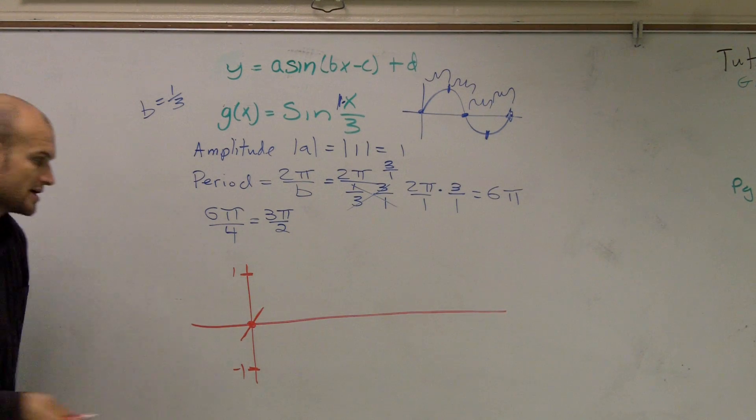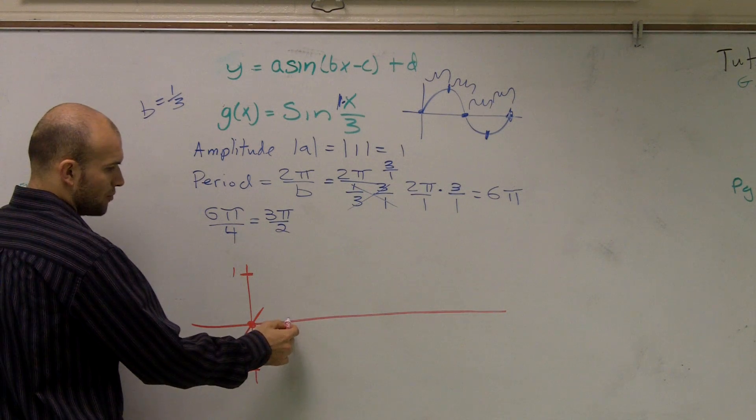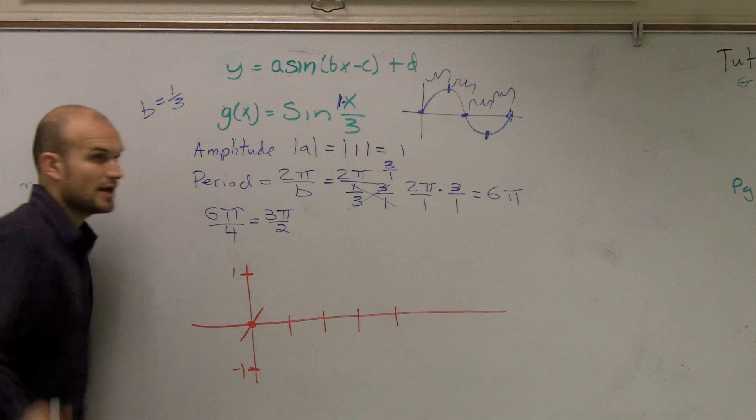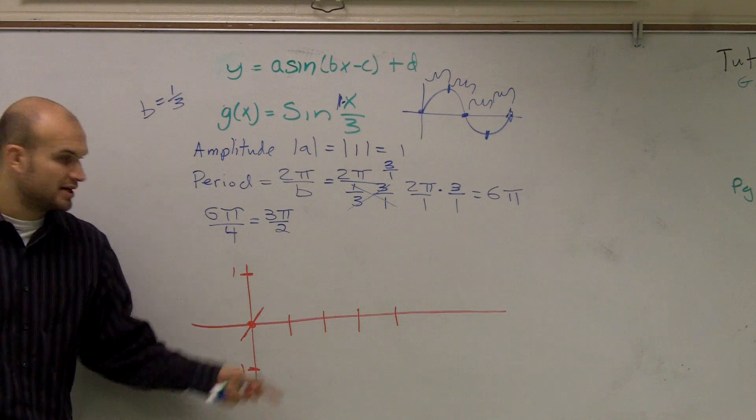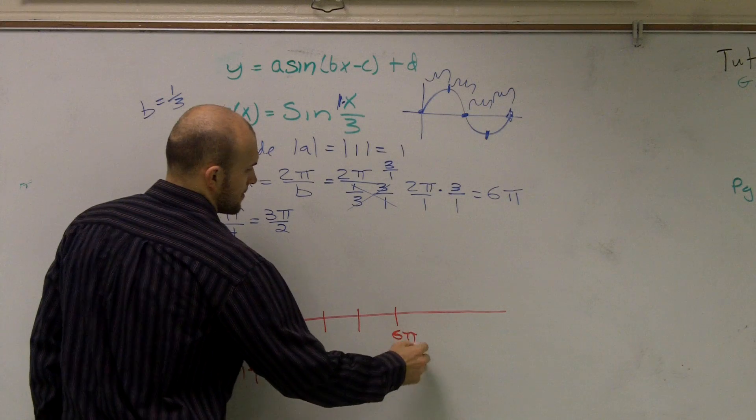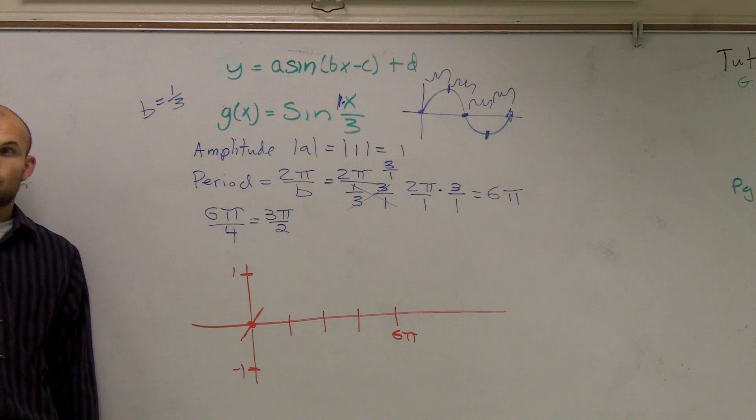Then I said there's 4 important points, right? So let's just graph. Let's just put those 4 important points there. 1, 2, 3, 4, as the 4th point is your end of your period, which is 6π. So that's 1 period.